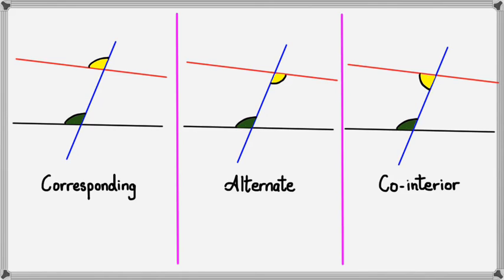That's basically the three relationships for the angles. In the next three videos in this series, we'll actually be looking at how these angles are related on parallel lines, because that's the only time they really make sense. That'll be covered in the next three videos. Okay, that's about it for this session — thanks for watching.